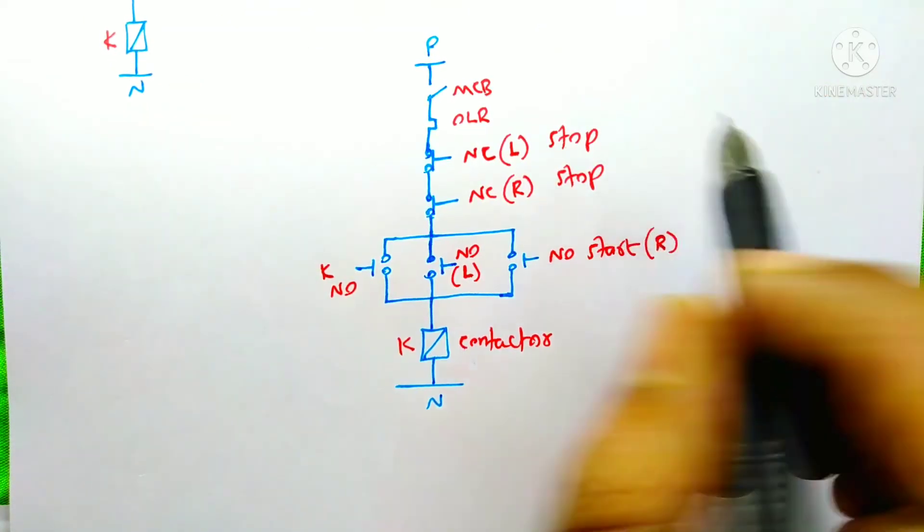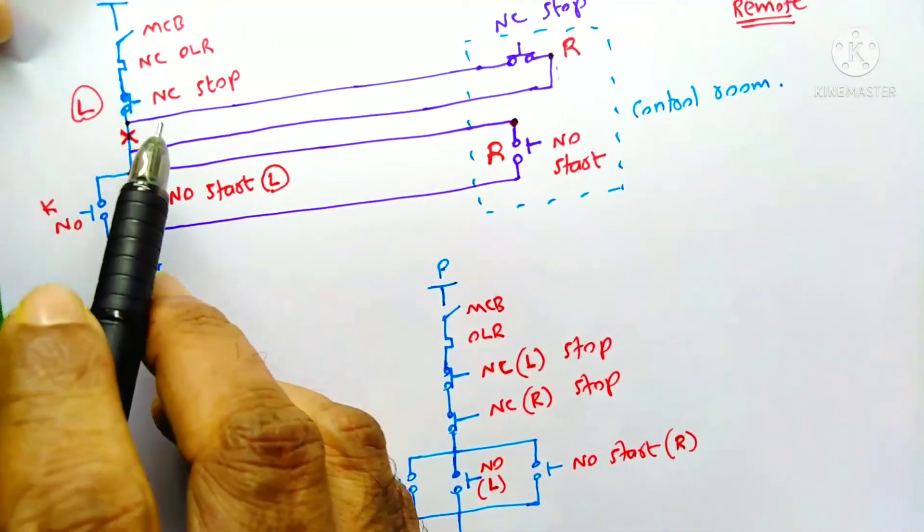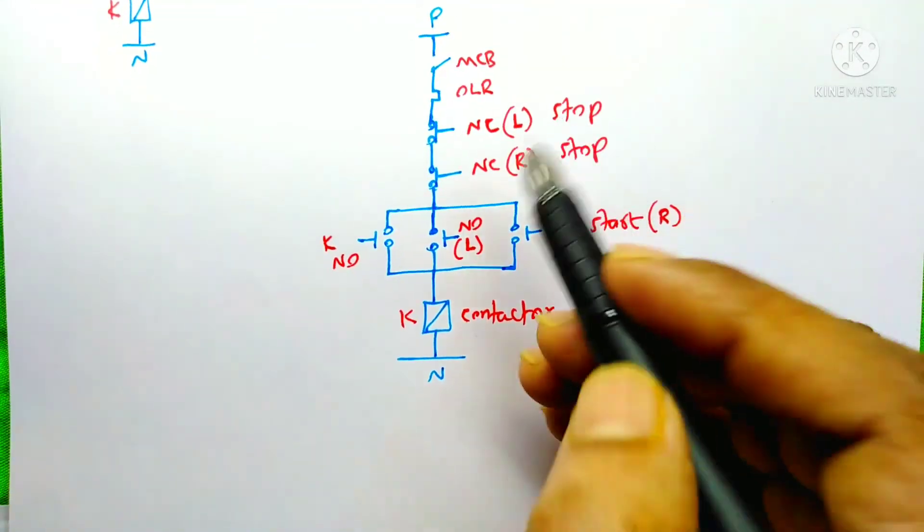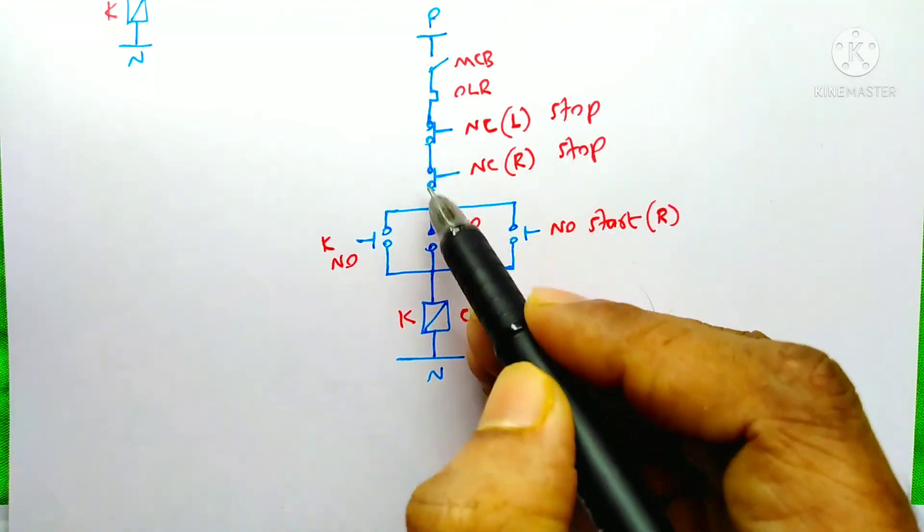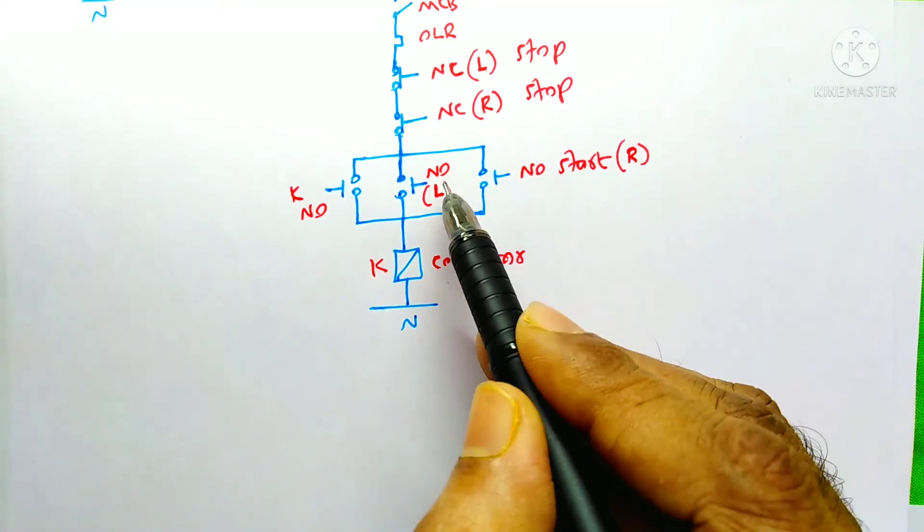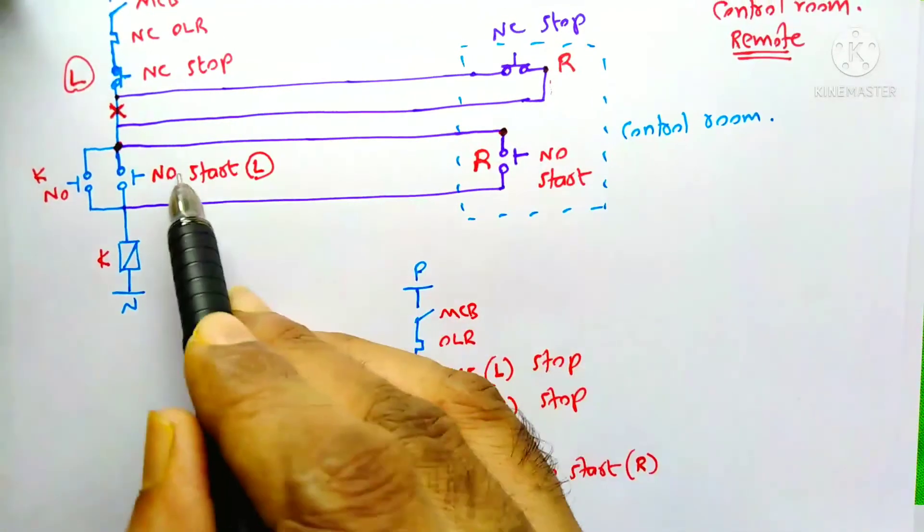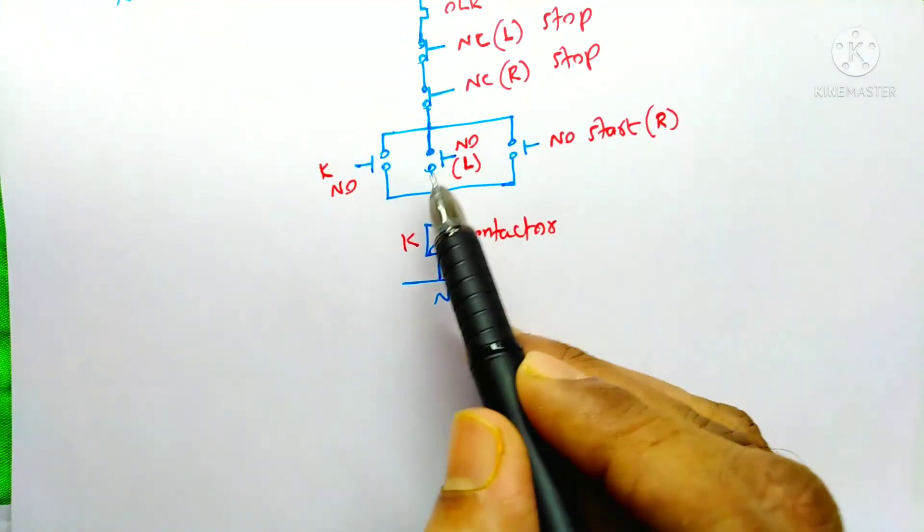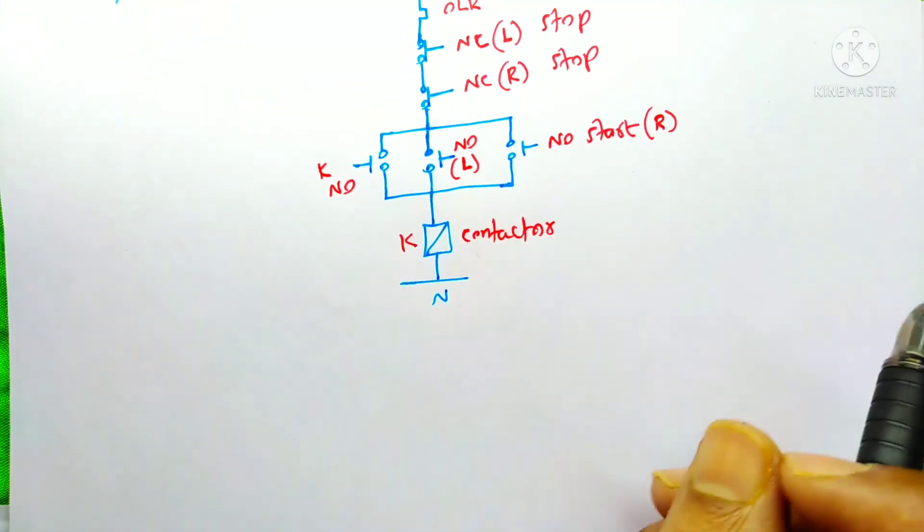Here I just re-draw the same circuit that I have drawn over here. That means these stop push buttons are in series. So here it is in series. And this start push button are in parallel. This start push button over here are parallel over here. It is a simple circuit.